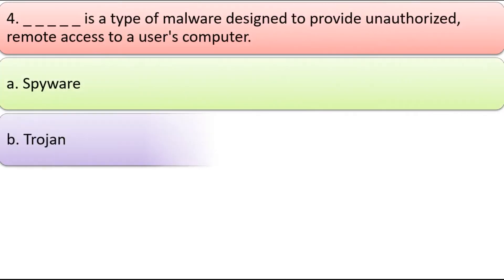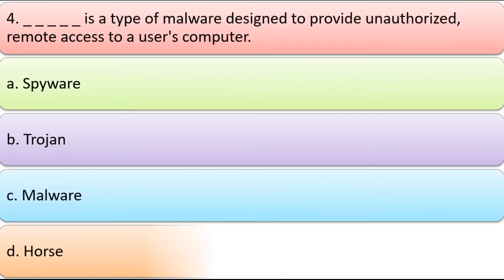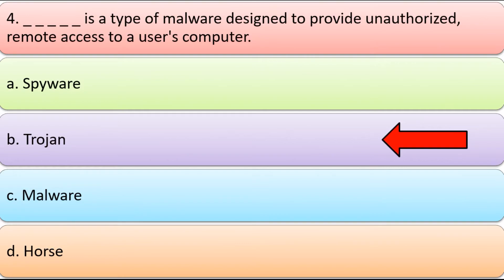Fourth, blank is a type of malware designed to provide unauthorized remote access to a user's computer. Options: a) Spyware, b) Trojan, c) Malware, d) Odds. Correct answer is b) Trojan.